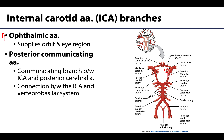Another more distally located branch of the internal carotid is the posterior communicating artery. It is sometimes not even described as a branch of the ICA because of its function as a connector between the ICA and the posterior cerebral arteries. Since the posterior cerebral arteries are the terminal branches of the basilar artery, these posterior communicating arteries serve as the main connection between the ICA and the vertebrobasilar system, making them a key component of the Circle of Willis.